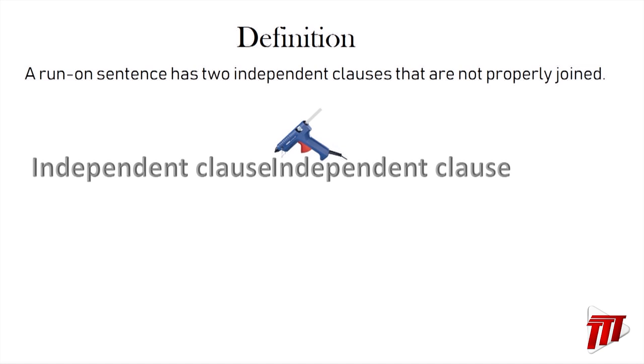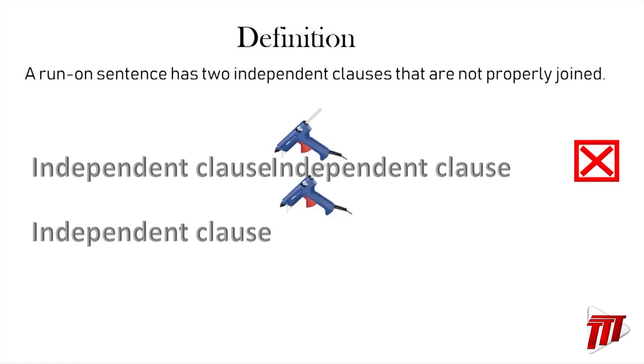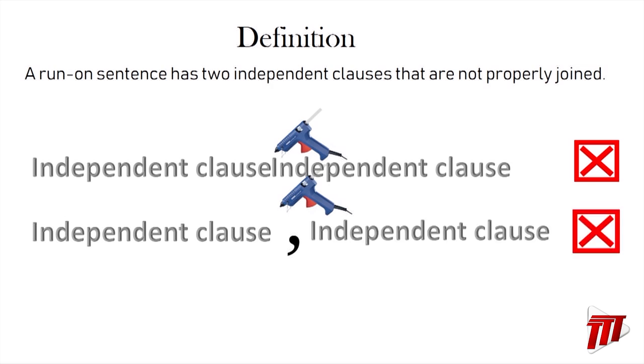We don't want that. And some people also think that by adding a comma between two independent clauses it will work, but that does not work at all. A run-on sentence has two independent clauses that are not properly joined.